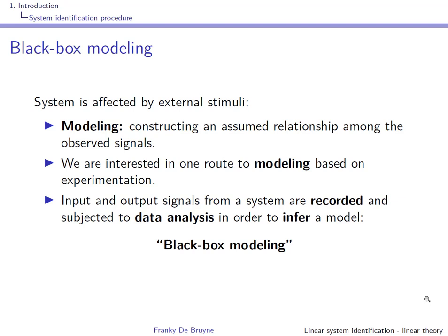This route is called black box modeling. The term black box refers to the fact that we do not have any prior model structure or idea of the signature of the system. So we assume a model structure with a certain complexity, identify the model, and then use model validation to see if the produced model is good. If not, we postulate a new model structure and redo the identification.